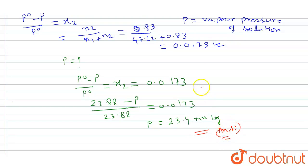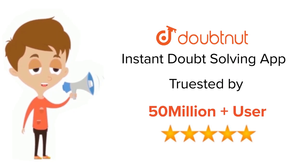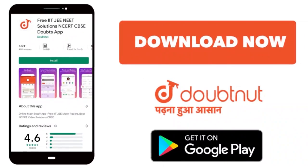And relative lowering of vapor pressure that is 0.0173. Thank you. For class 6-12, IIT JEE and NEET level, trusted by more than 5 crore students, download Doubtnet app today.